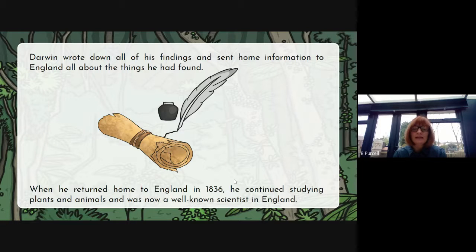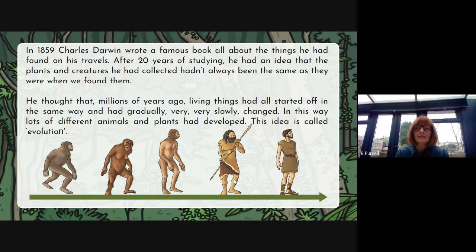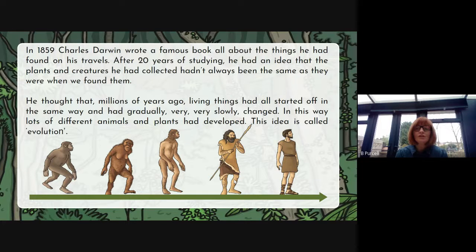When he returned home to England in 1836 he continued studying plants and animals and was now a well-known scientist in England. In 1859 Charles Darwin wrote a famous book about all the things he had found on his travels. After 20 years of studying he had an idea that the plants and creatures he had collected hadn't always been the same as they were when he found them. He thought that millions of years ago living things had all started off in the same way and had gradually, very slowly over hundreds and thousands of years, changed. In this way lots of different animals and plants had developed.